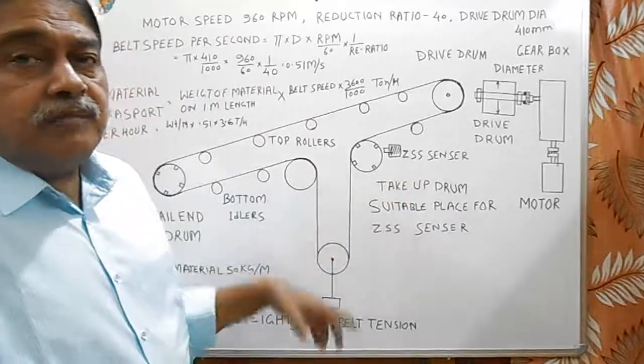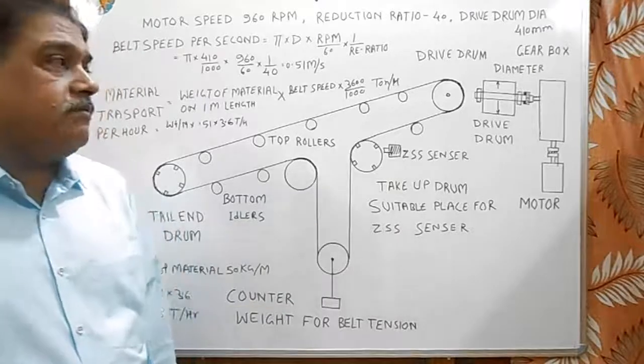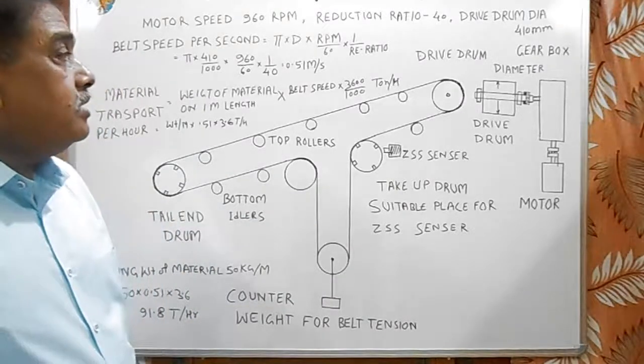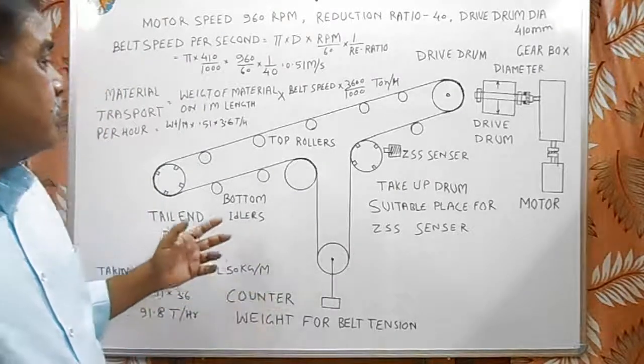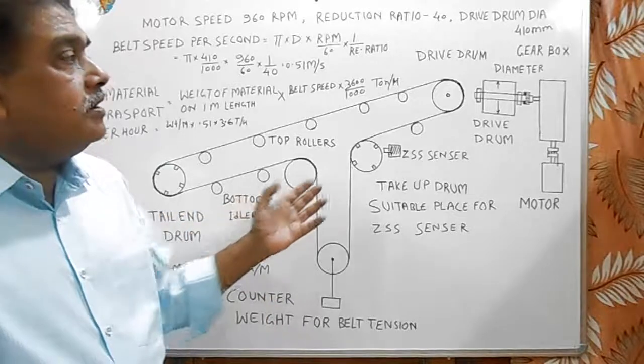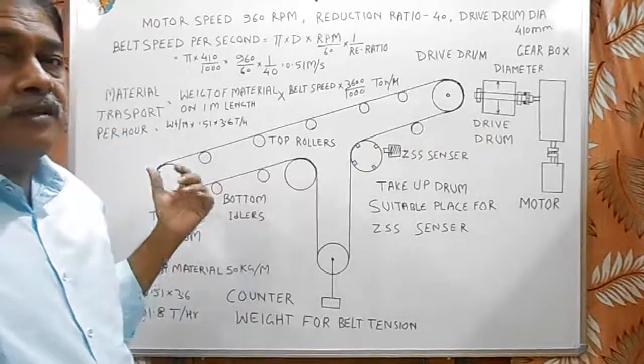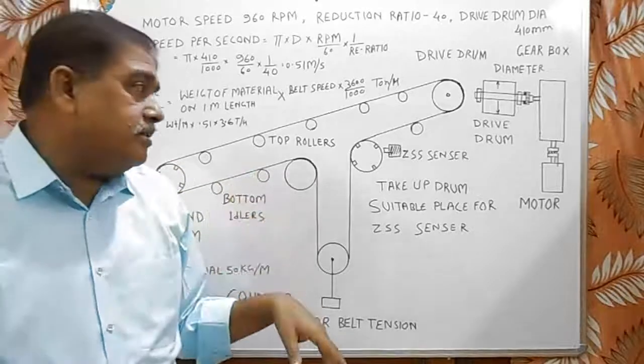And these belt conveyors are interlocked with the next belt conveyor and previous belt. They provide electrical interlockings.